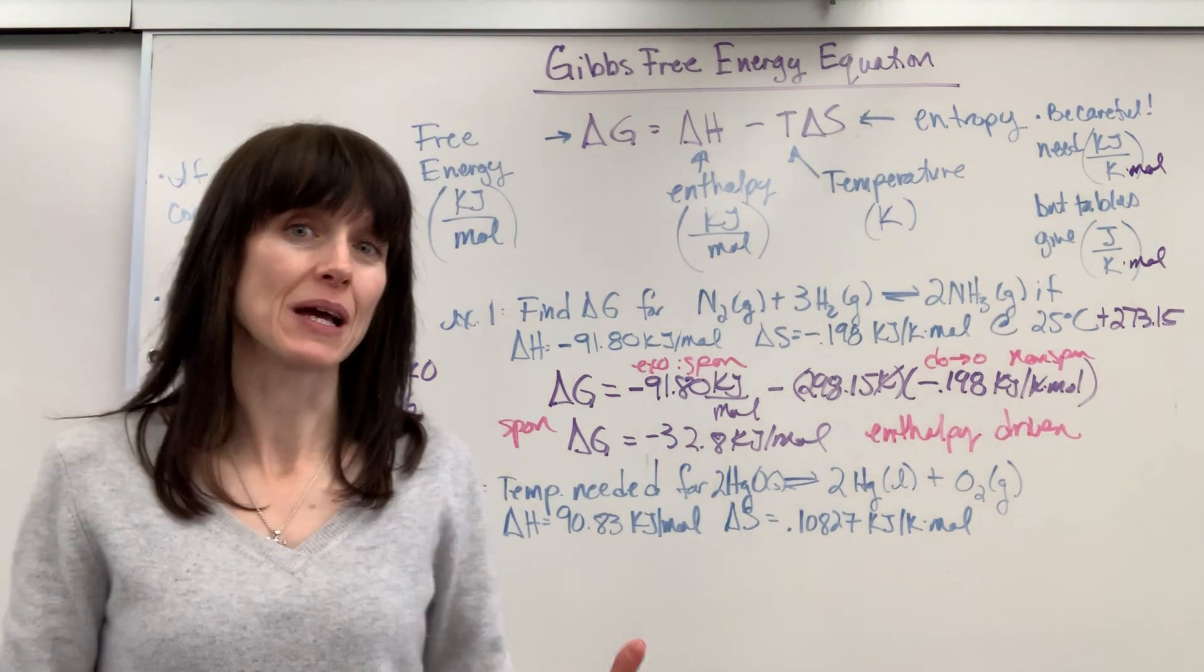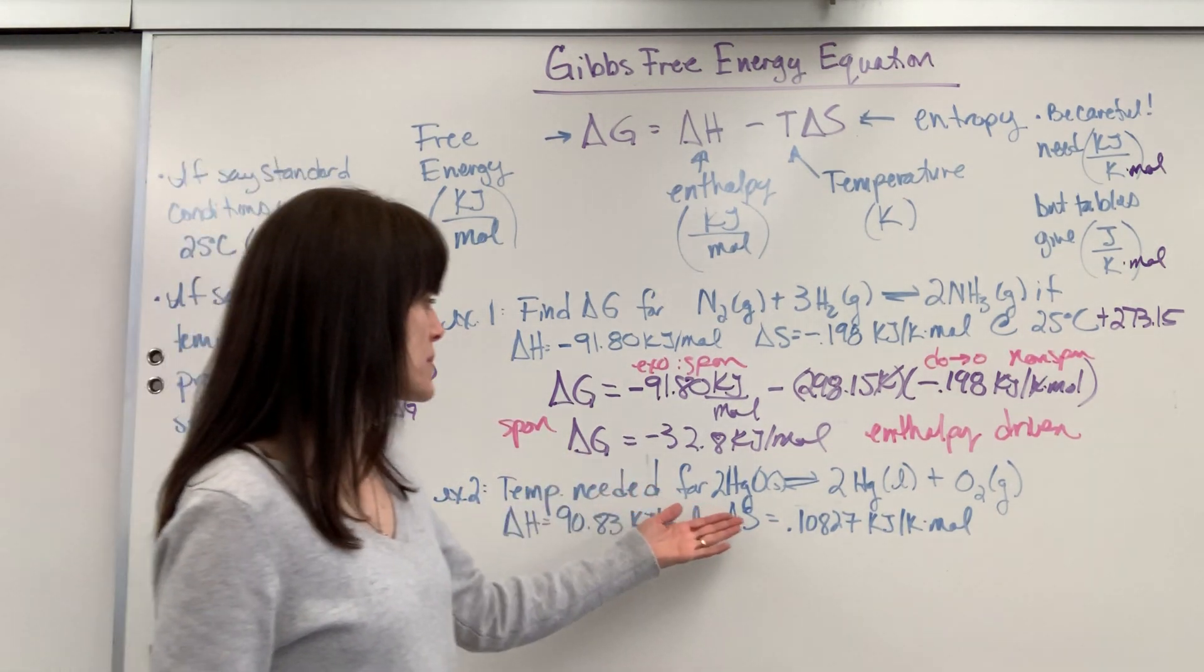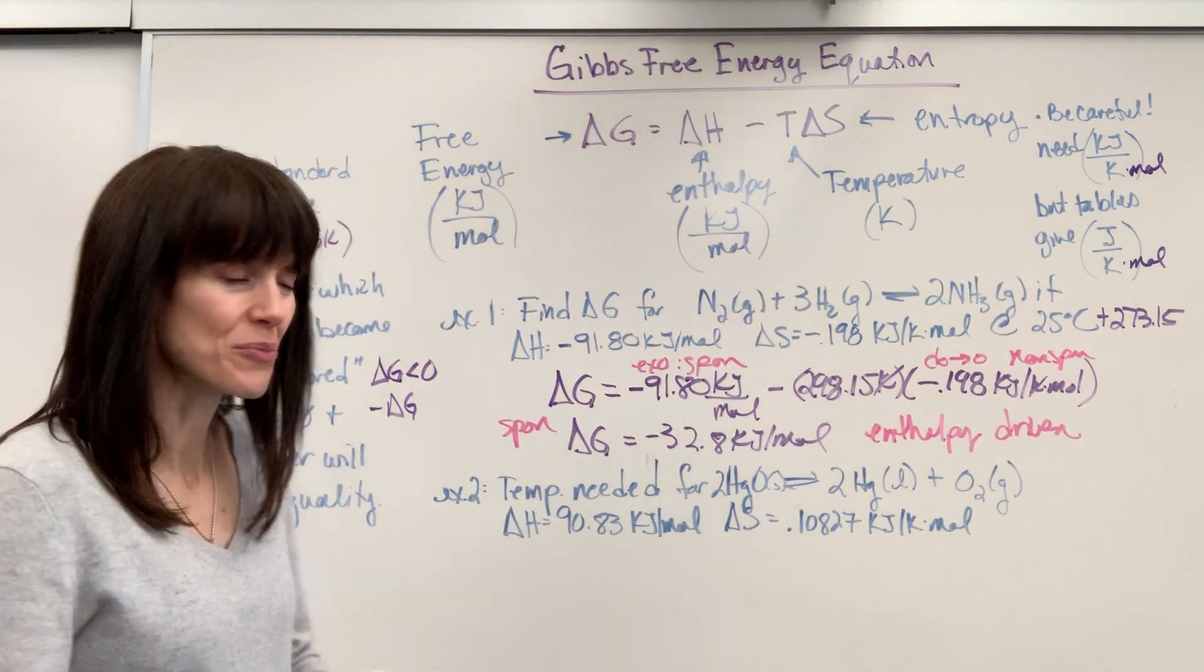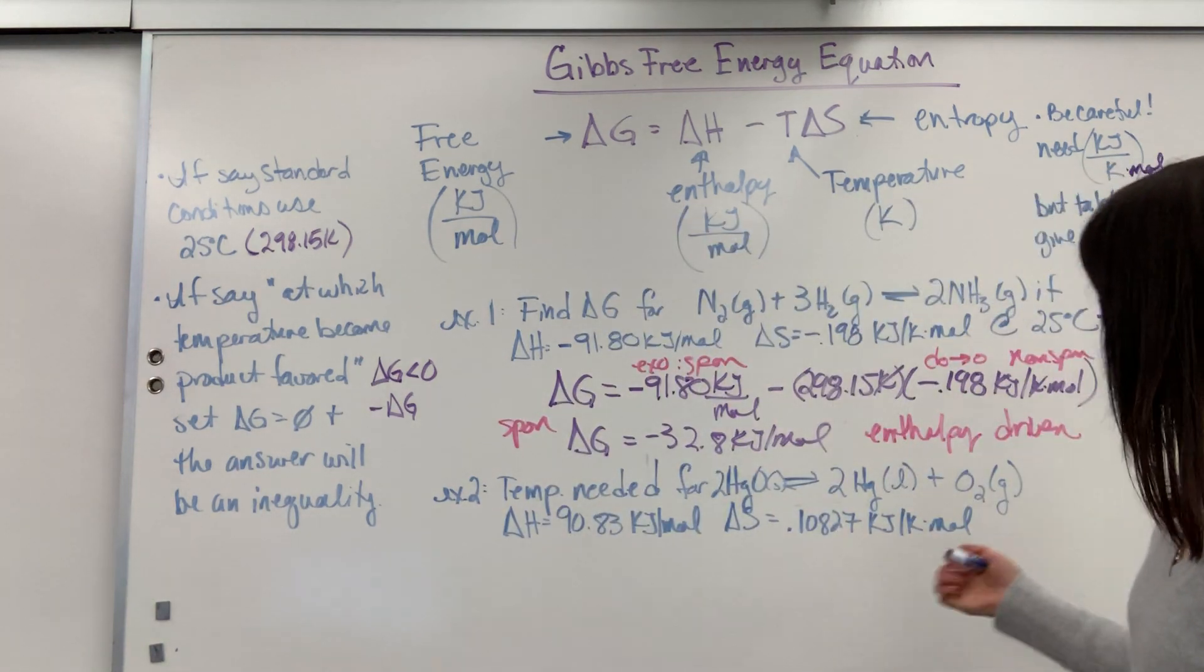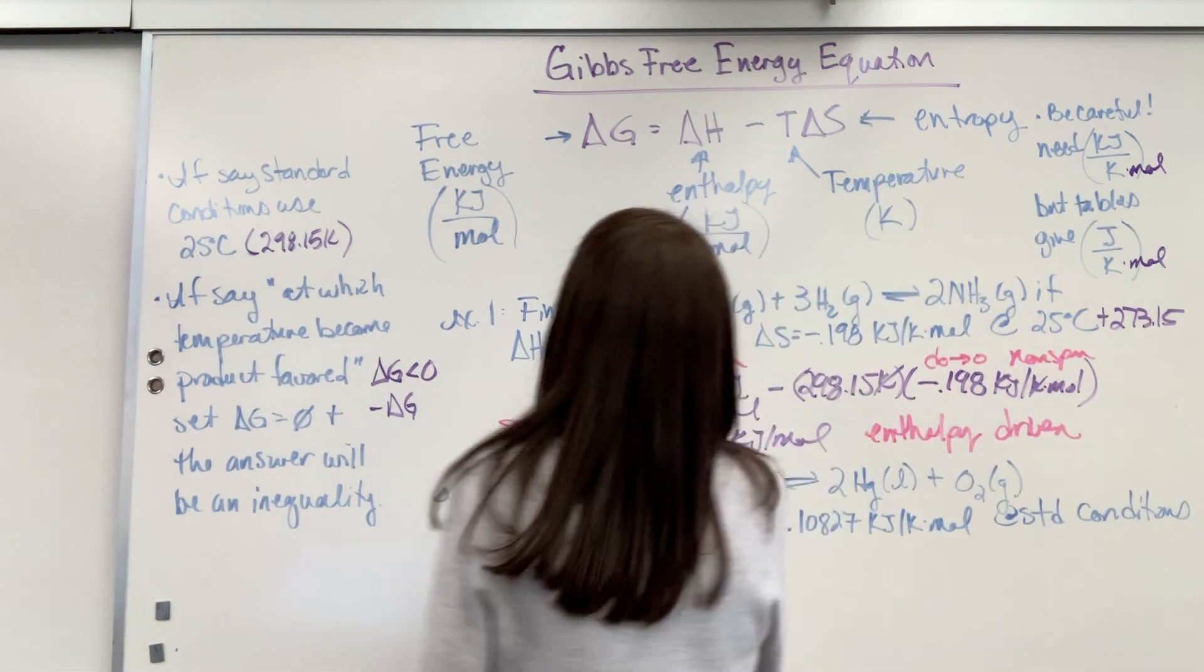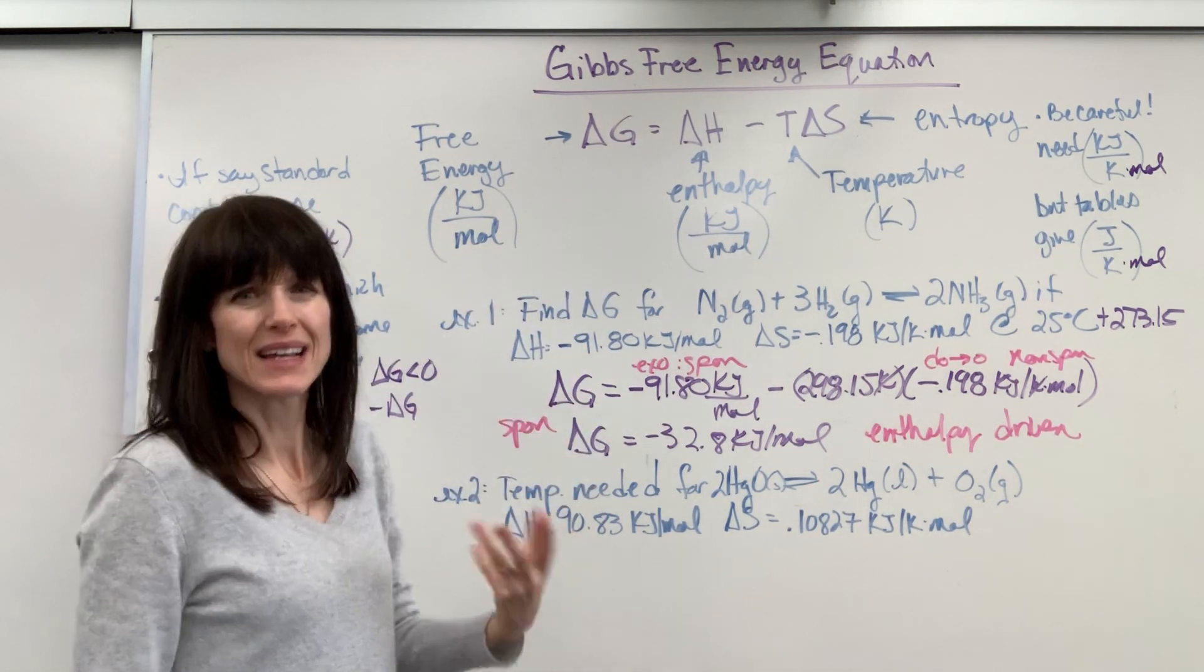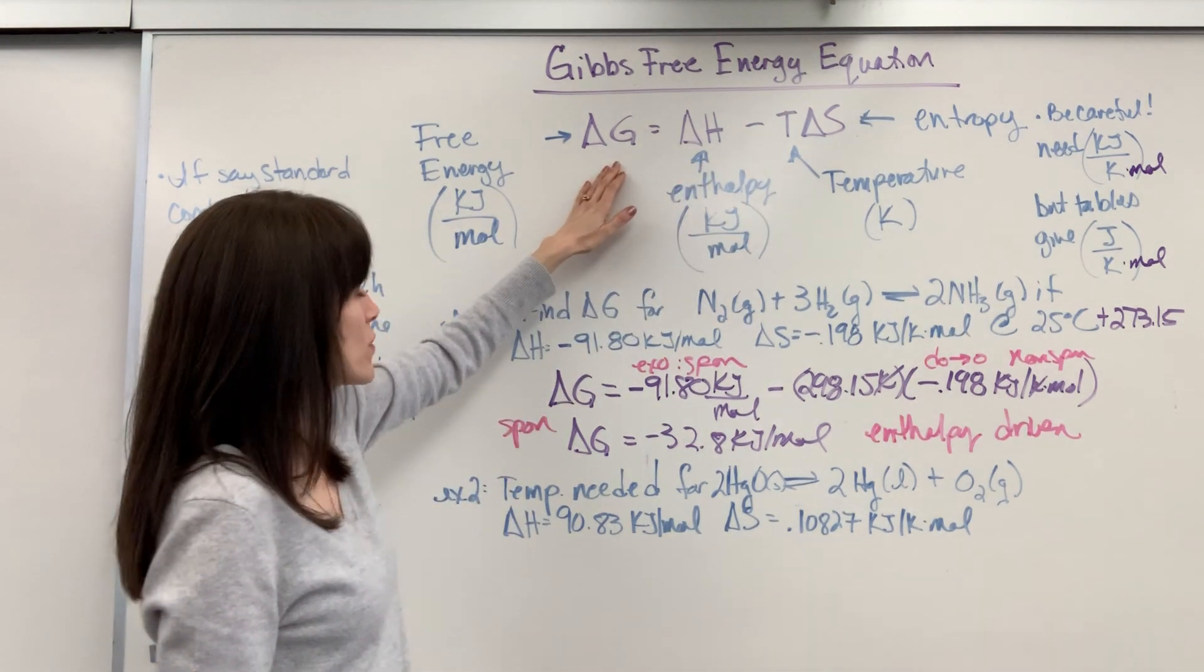Okay, nice. Now, this is one where they're asking for the temperature. You're going to answer with an inequality. So example number two. They want to know what's the temperature needed for the decomposition of this mercury two oxide to form mercury liquid and oxygen gas. And they give us delta H, they give us delta S. So let's go ahead and plug everything in. If we look at our equation, in essence, it looks like we have two unknowns. You have delta H, and you have delta S. And they want to know at what temperature.